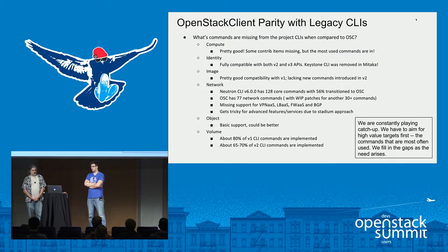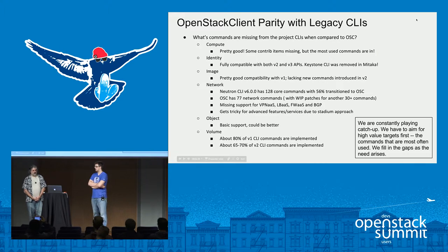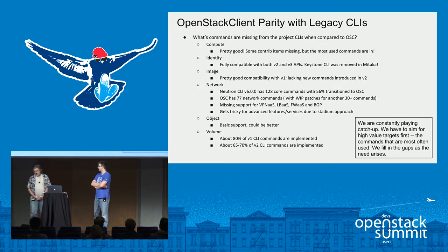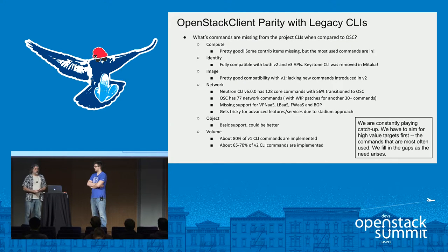We just haven't had feedback saying we have to have this image command — people really want networking commands, so that's what we focused on. No one's been screaming for V2 image CLI support yet, and sometimes that's a measure of how people are using it even though image V2 has been around for a couple of years. Changing versions is hard and OpenStack as a whole is learning that — Nova tried to do V3 and went to the micro-version route. That's part of the same problem with clients — we're going to be playing catch-up.